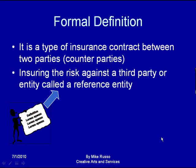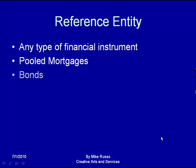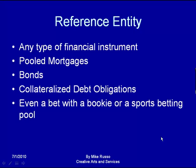A reference entity is any type of financial instrument such as pooled mortgages, bonds, collateralized debt obligations, and even a bet with a bookie or a sports betting pool. Now that sounds abstract, but we're going to present this in two parts: the first part is an analogy, and the second part will be a presentation of an actual credit default swap.